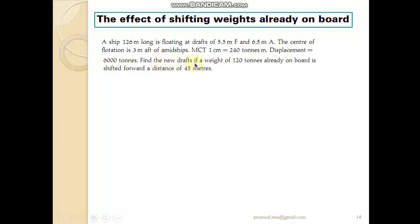We need to find the new drafts. In the second sentence, the question is actually being asked. A weight already on board the vessel — 120 tons — is shifted forward from its present position by a distance of 45 meters. This will definitely change the trim, creating a change of trim which will affect both the forward and aft drafts. That is what is asked in the question.